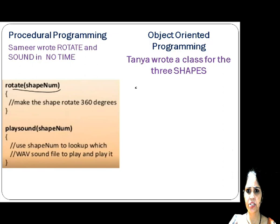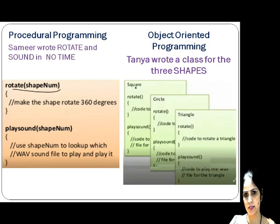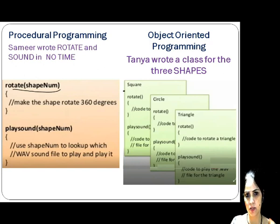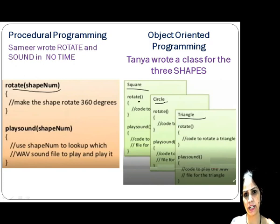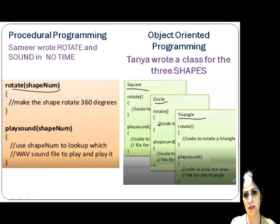In object-oriented programming, Tanya wrote three classes for different shapes — for square, for circle, and for triangle. For square she wrote a rotate function and a play sound function. Similarly for circle as well as for triangle.